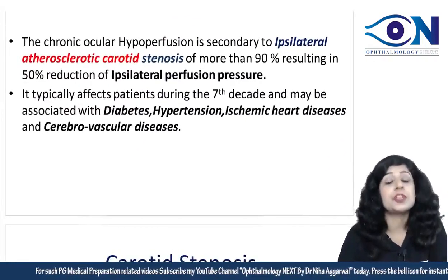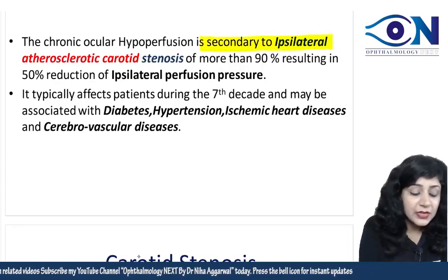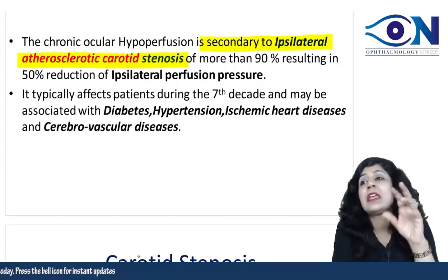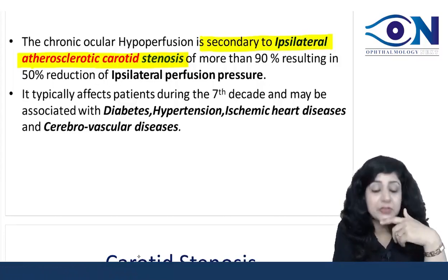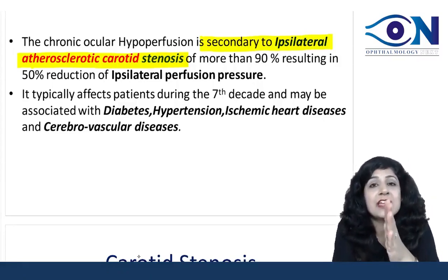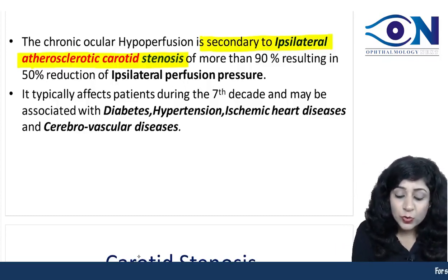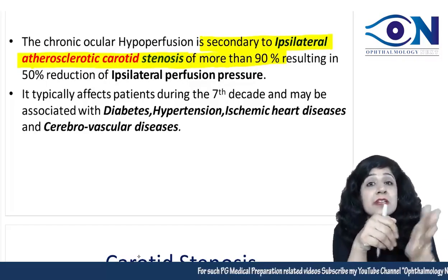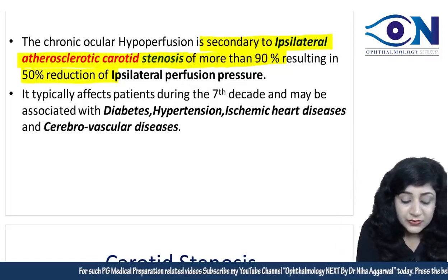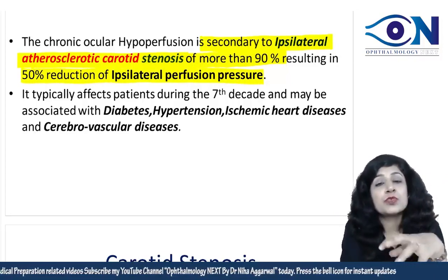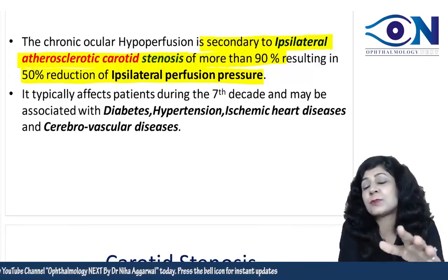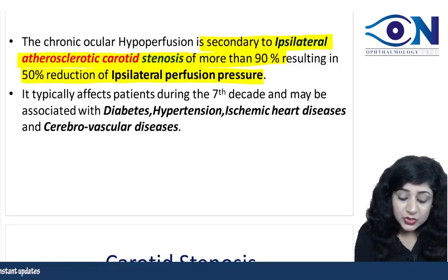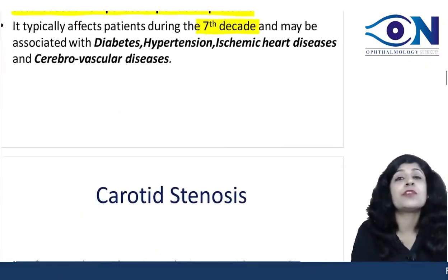The chronic ocular hypoperfusion is mostly secondary to ipsilateral atherosclerotic carotid artery stenosis. Since it is unilateral in 80% of cases, whichever side has the carotid artery stenosis — more than 90% — that results in a 50% reduction of perfusion pressure, which is sufficient to cause ischemia and hypoperfusion. It typically affects patients during the seventh decade.